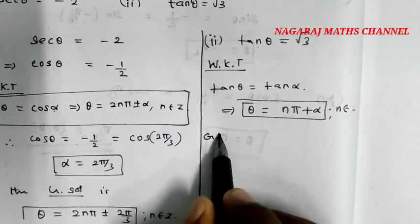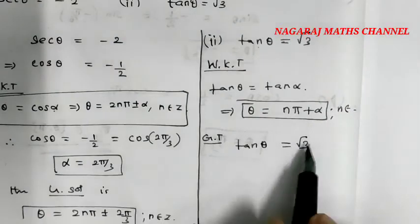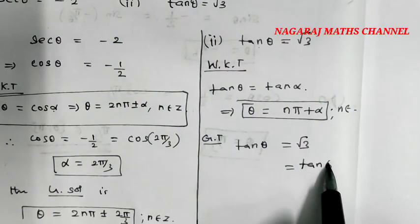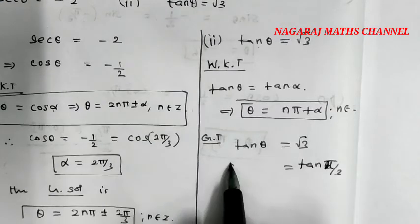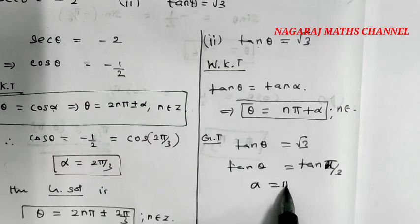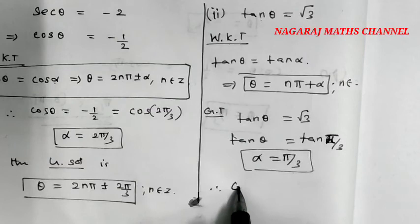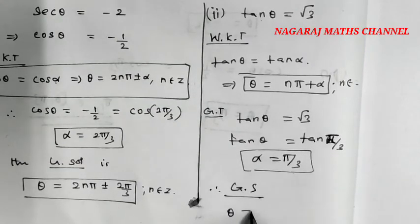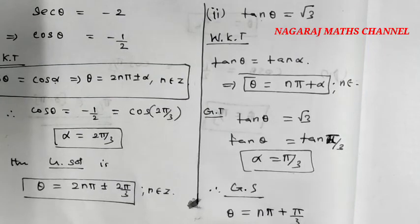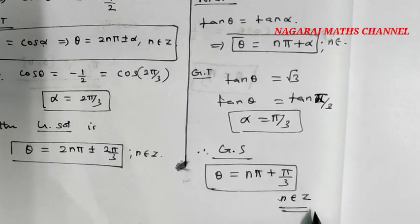We know that tan θ equals root 3. Since tan(π/3) equals root 3, we have tan θ equals tan(π/3), so α equals π/3. Therefore the general solution is θ equals nπ plus π/3, where n belongs to Z.